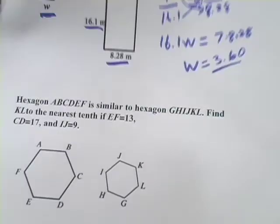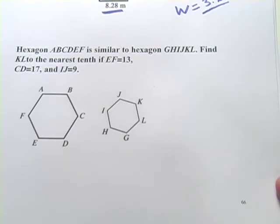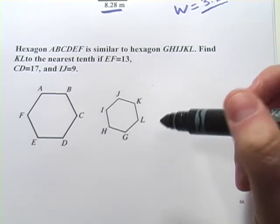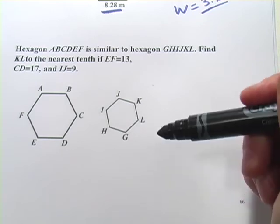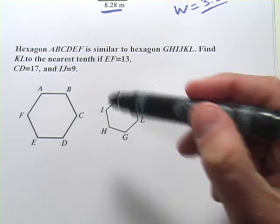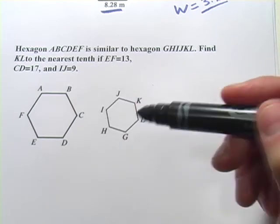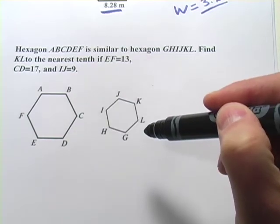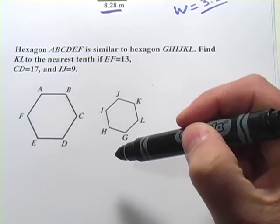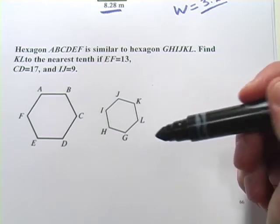Let's do one more. This problem has to do with a similar hexagon. And this can be a little confusing at first in trying to figure out which sides correspond to each other. Now don't make the mistake that this is necessarily a regular hexagon. All of these sides don't have to be the same length. This could be an irregular hexagon.